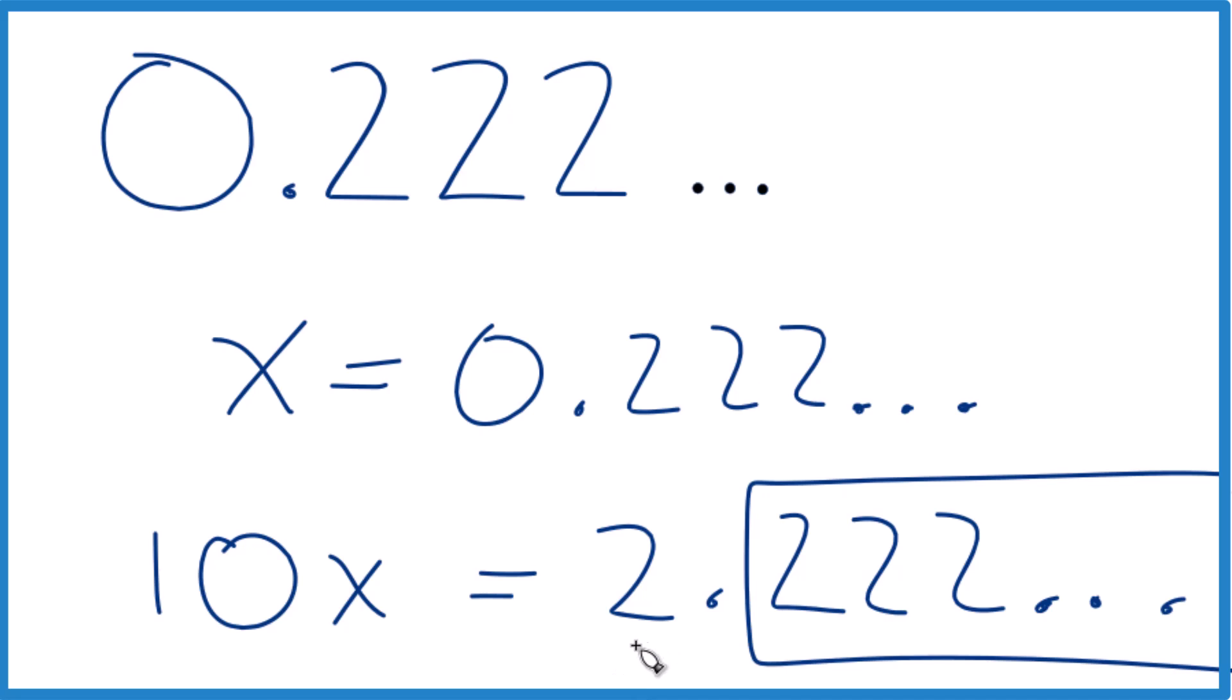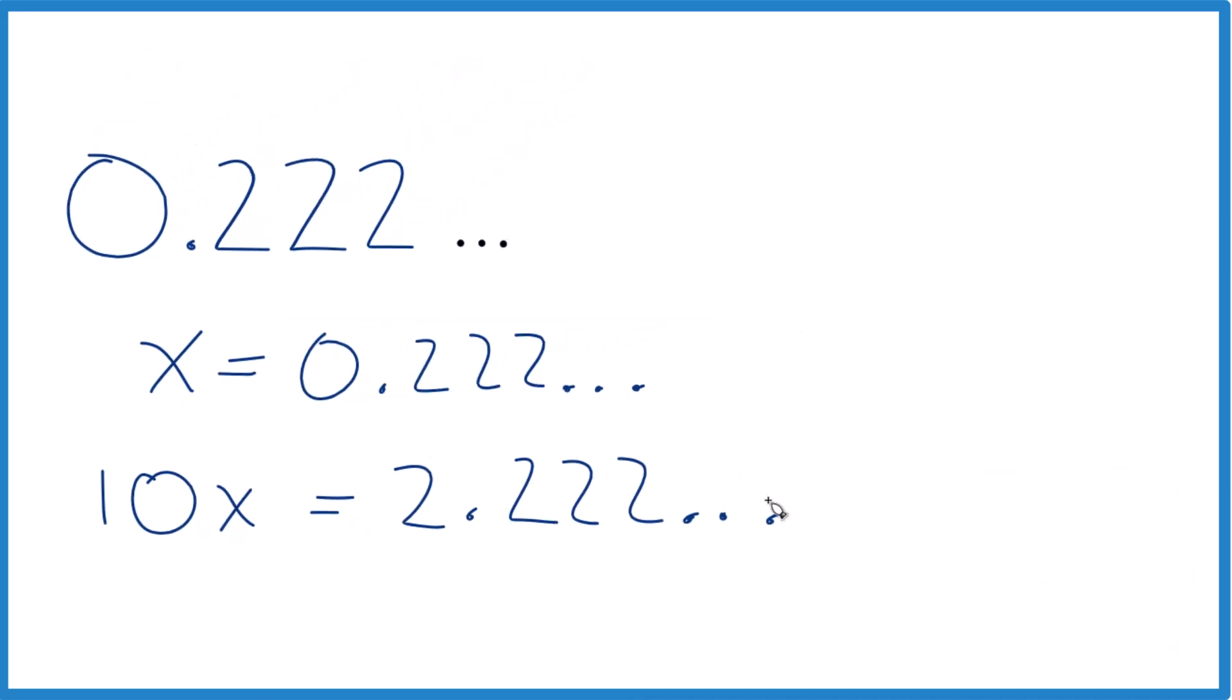So I'm just gonna subtract 0.222 repeating here, but I also have to do it to this side. And here's the trick: instead of this 0.222, that's equal to X.